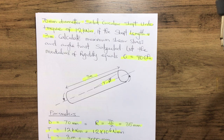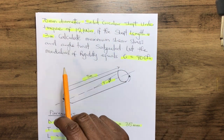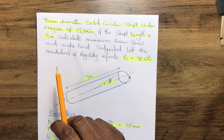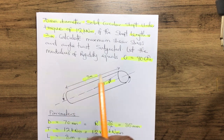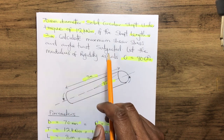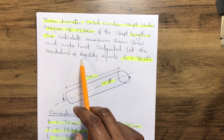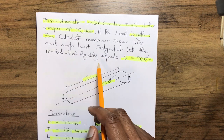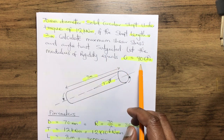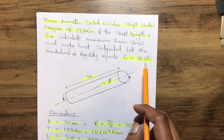Now let's read the following question. A 70 millimeter diameter solid circular shaft is under a torque of 12 kilonewton meter. If the shaft length is 20 meters, calculate the maximum shear stress and the angle of twist. Let the modulus of rigidity G equal 90 gigapascals.